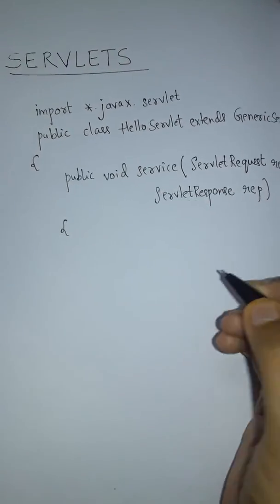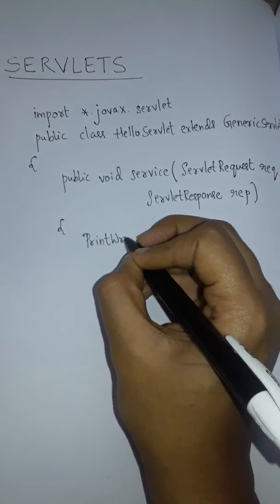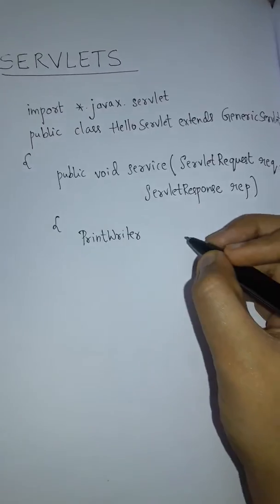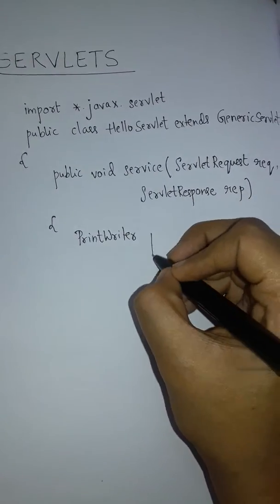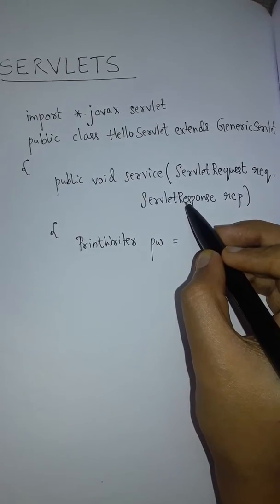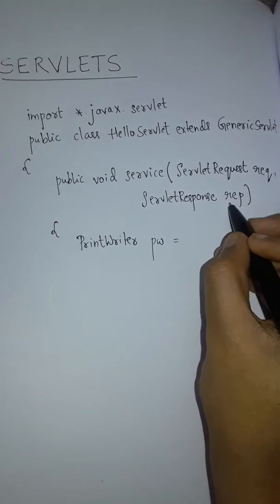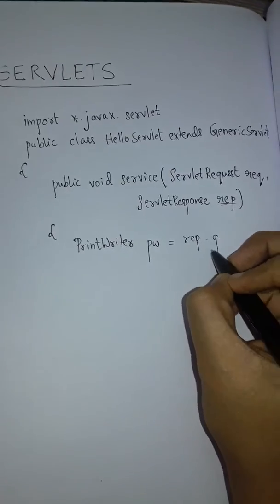And now we have a PrintWriter class in the servlets which is used to print the text by creating an object of it. It is a part of the ServletResponse class, hence this object we consider and we get the getWriter method.